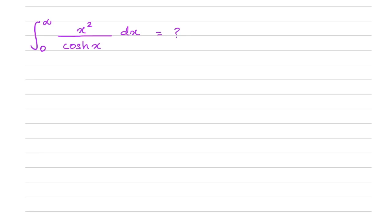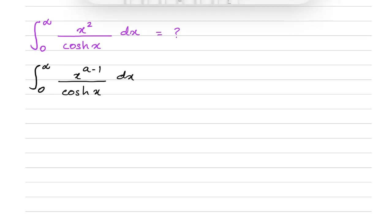To begin, I'm going to generalize this integral. I define I(a) as the integral from zero to infinity of x to the (a minus 1) over hyperbolic cosine of x dx.